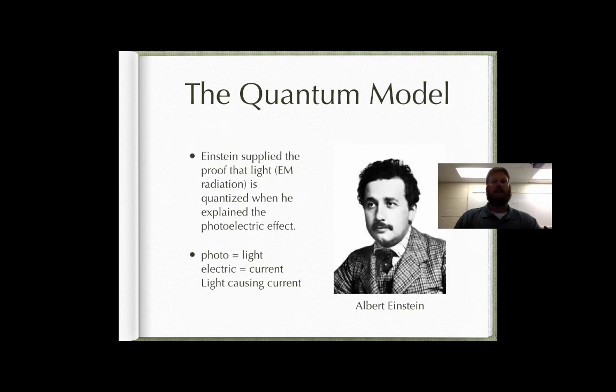Einstein took Planck's ideas and applied it to a phenomenon known at the time as the photoelectric effect. Photo meaning light, electric meaning some type of current. So photoelectric effect literally means light causing a current. Einstein won the Nobel Prize for explaining the photoelectric effect. So without going into drastic detail, we're going to watch a short video about the basics of the photoelectric effect.